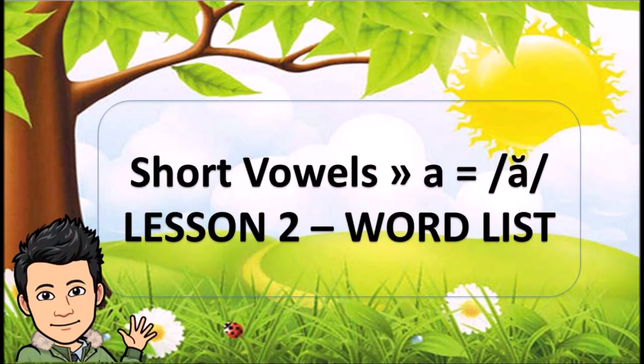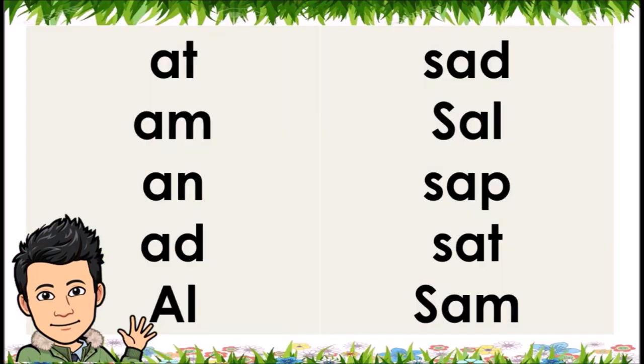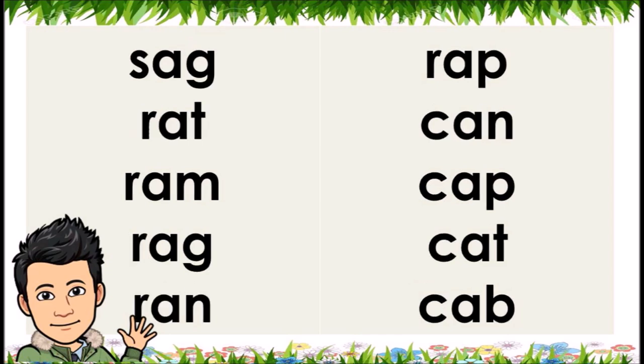Short vowels: A equals A. Lesson 2. Word list: At, am, in, add, al, sad, sal, sap, sad, Sam, sag.